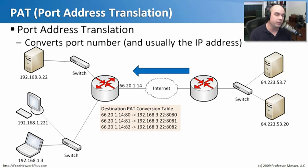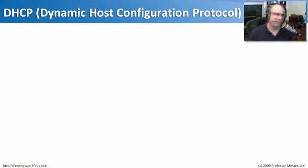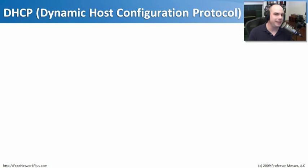You've probably plugged into a network with your laptop or desktop, brought up your browser, and started browsing the network without doing any type of IP address configuration on your machine whatsoever. That is thanks to something called Dynamic Host Configuration Protocol, or DHCP. DHCP is very common on local routers in home offices, while large organizations have dedicated servers for DHCP. It automates the process of providing you with an IP address, a subnet mask, and many other options as well.